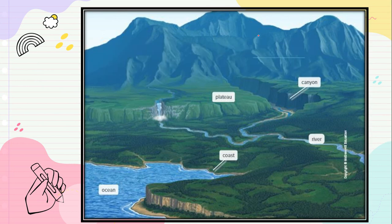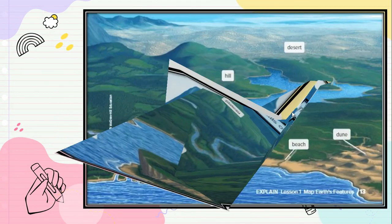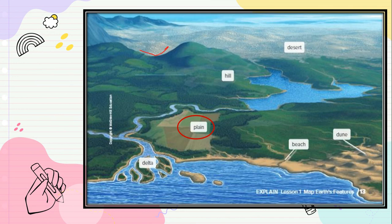A valley is when mountains meet and make V-shapes. The V in valley helps us remember — it is the lowland between a hill or mountain. A canyon is also a valley but it makes a U-shape, so we give it a special name: canyon.